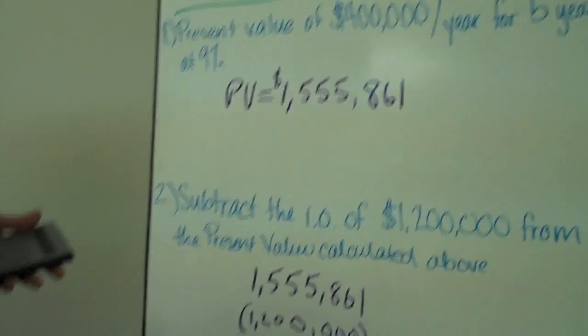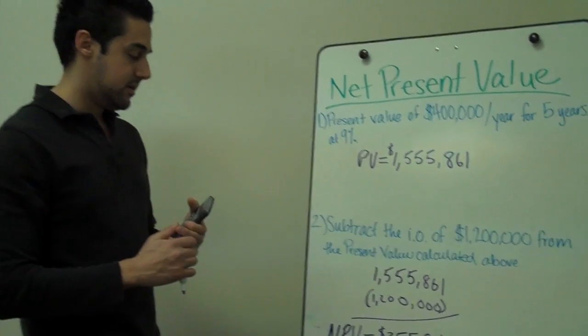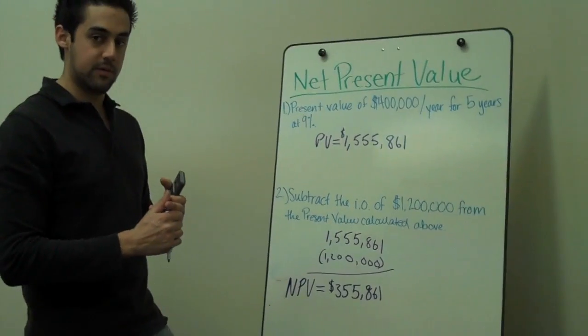And we are going to accept this project using the NPV rule because the value is greater than zero.